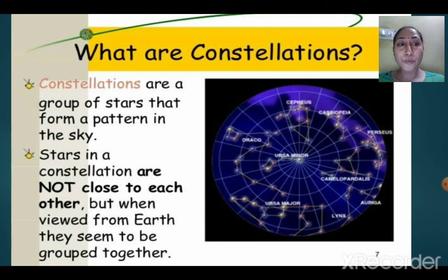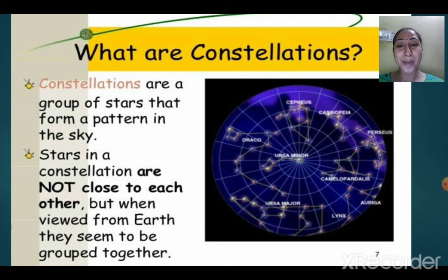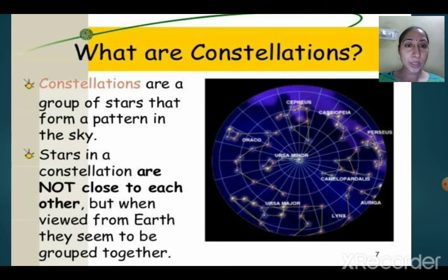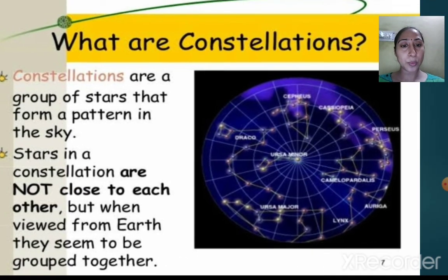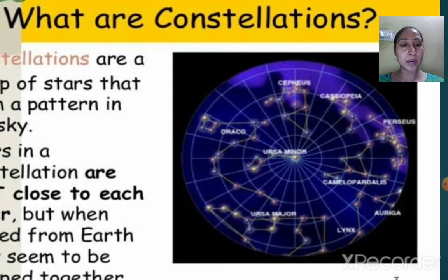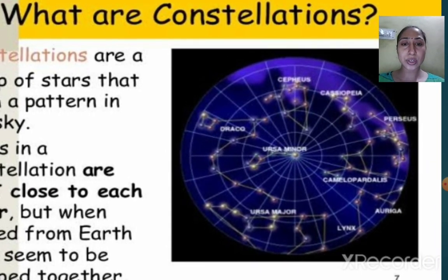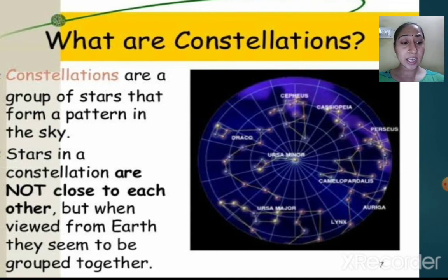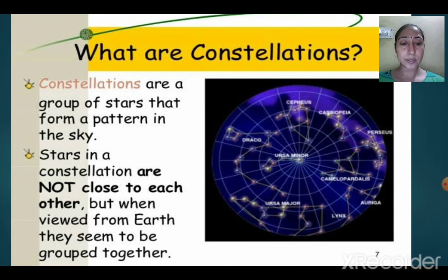Stars in a constellation are not close to each other — they appear to be forming some patterns, so they appear to be close to each other, but when viewed from Earth they appear to be grouped together. In reality they are millions and millions of kilometers far from each other. There are more than 88 well-known constellations.